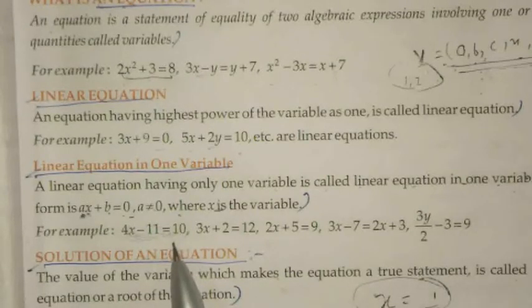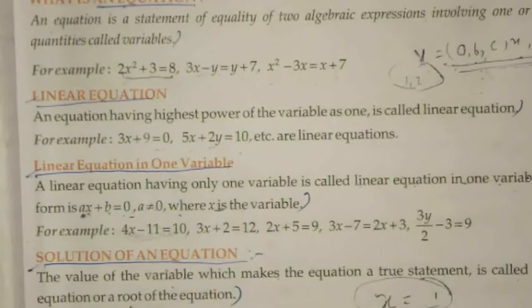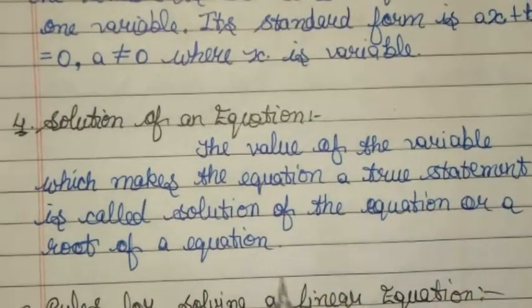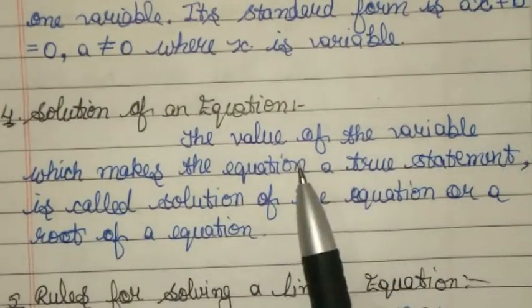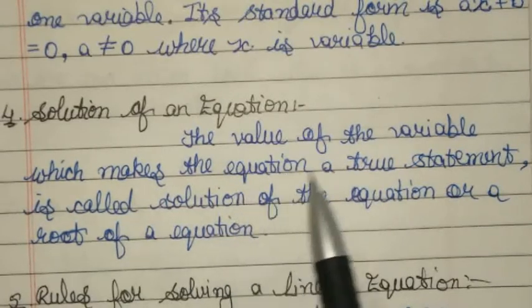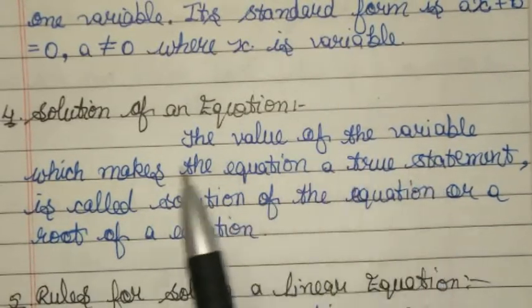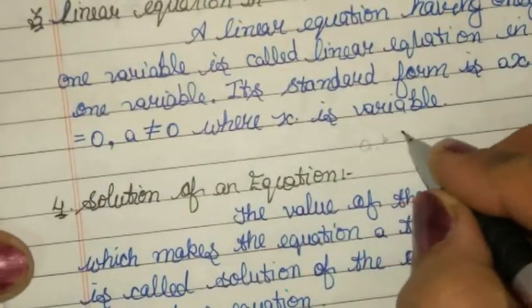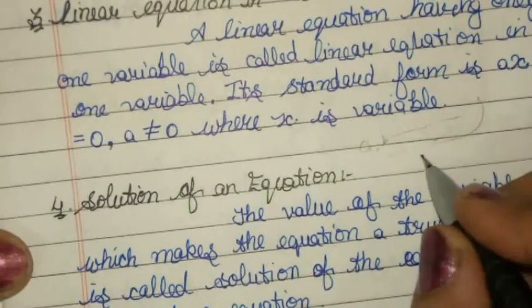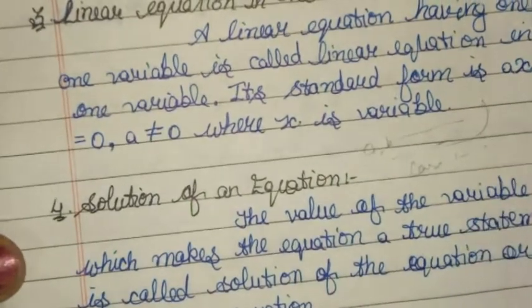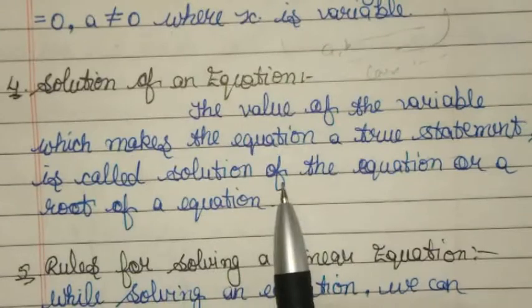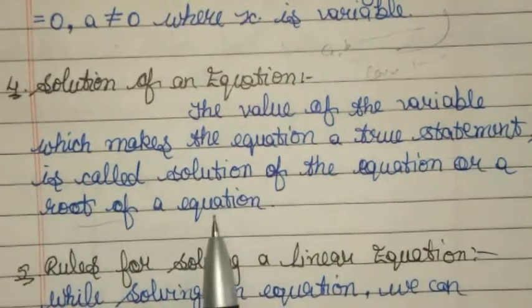From such equations we find the value of x. These are our linear equations in one variable. The solution of an equation is the value of the variable which makes the equation true. Variables are a, b, c, x, y, z, and constants are numerical values like 1, 2, 3. The value that satisfies the equation is called the solution or root of the equation.